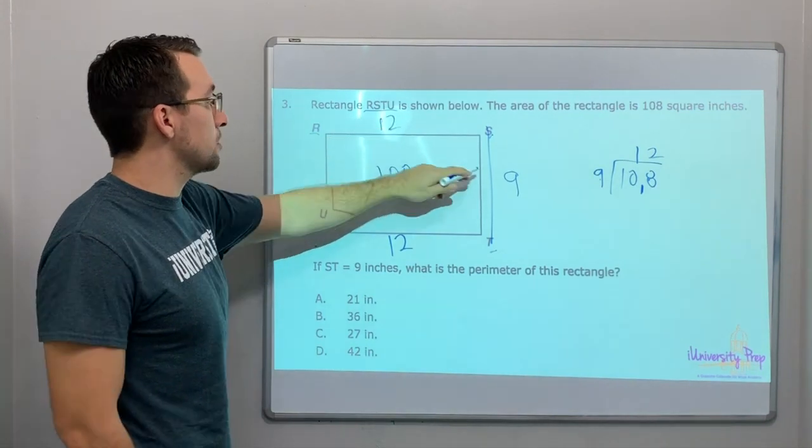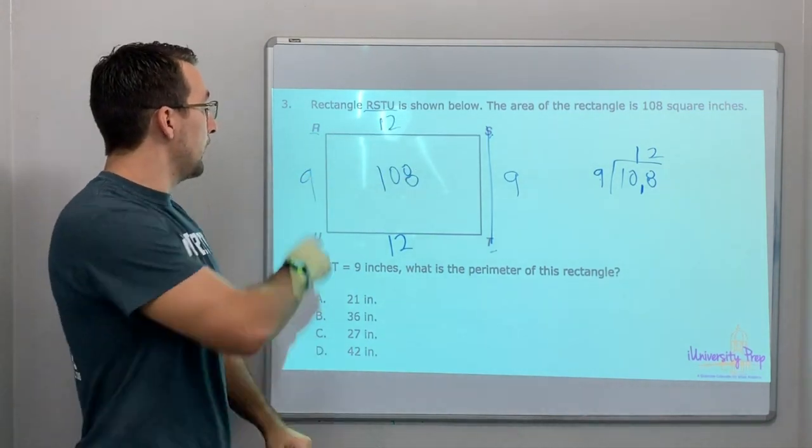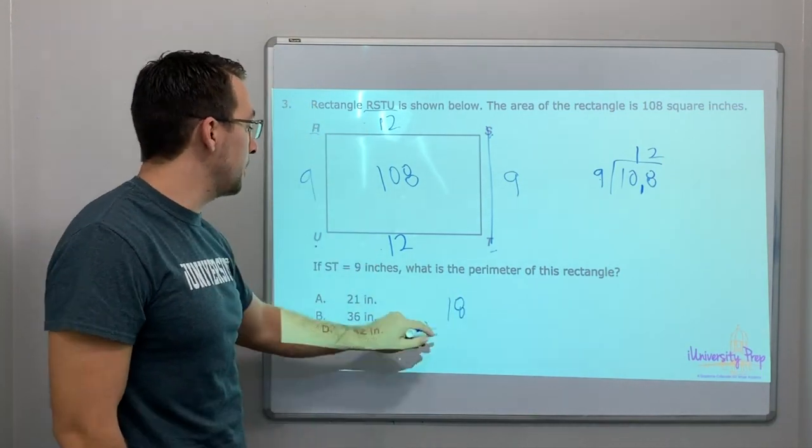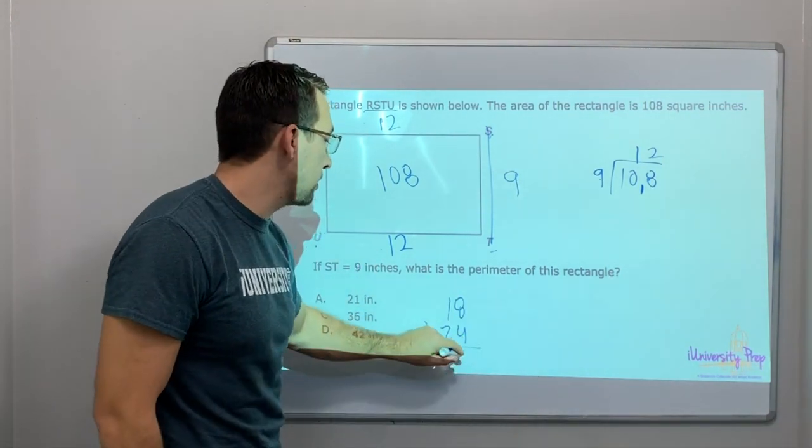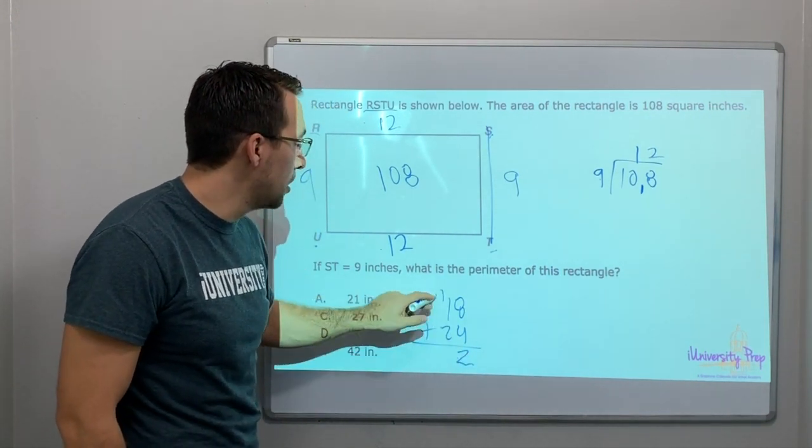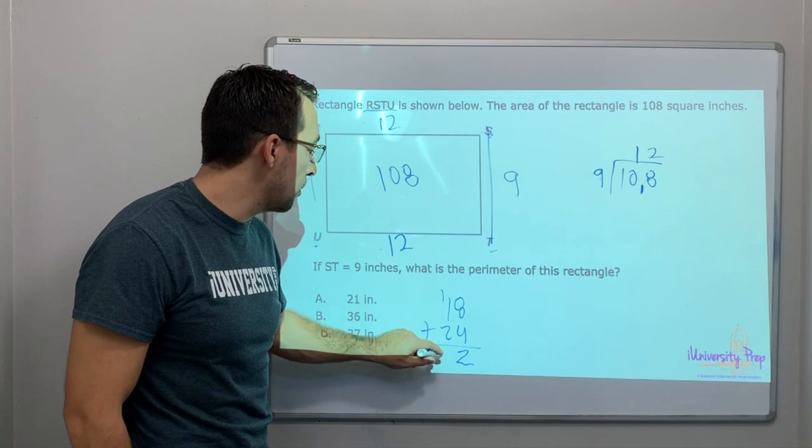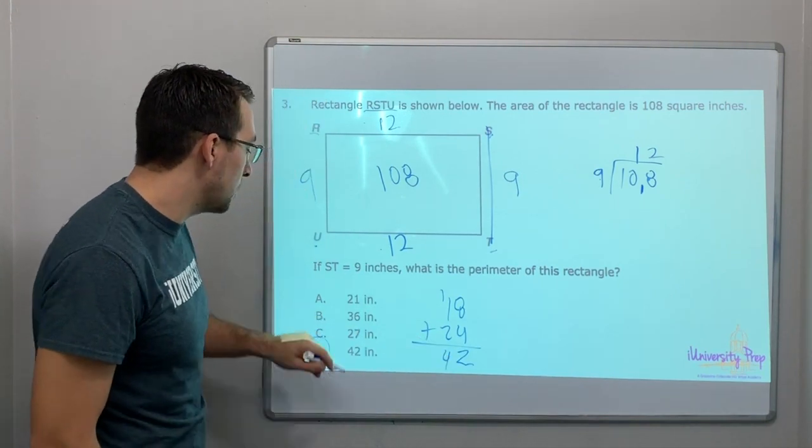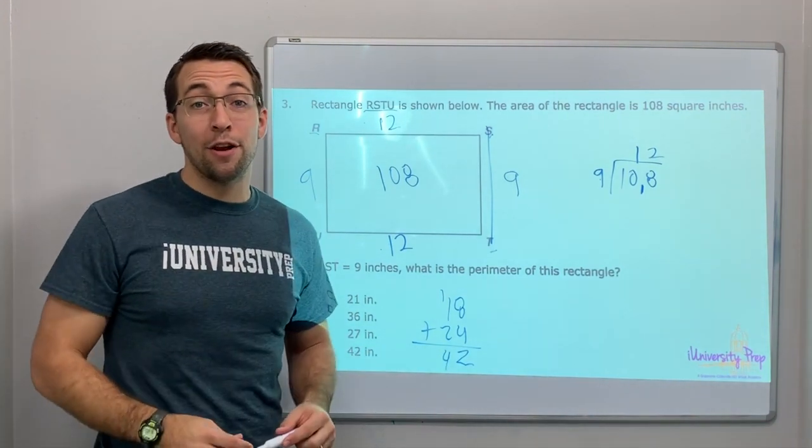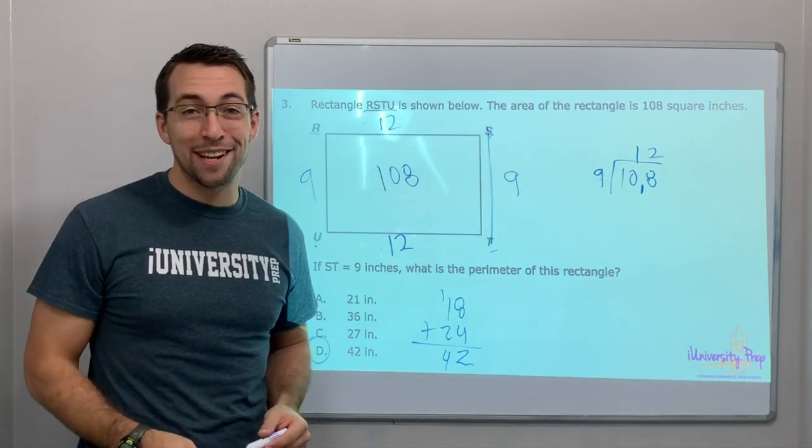9 plus 9 is 18, 18 plus 12 plus 12 is 24. That's our answer - 42 inches is the perimeter around the rectangle. Thanks so much for watching these videos. We'll see you next time.